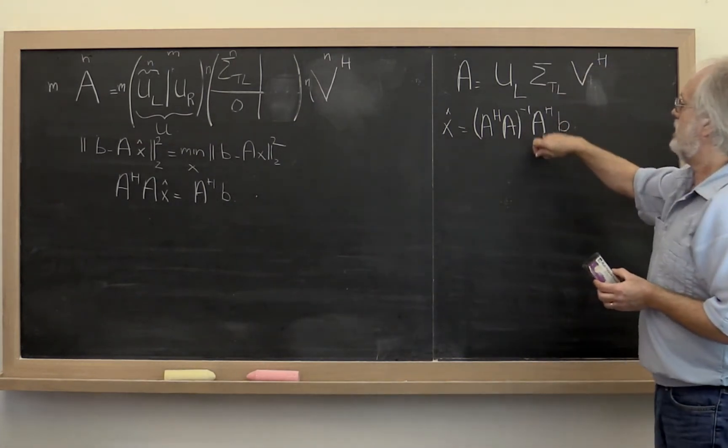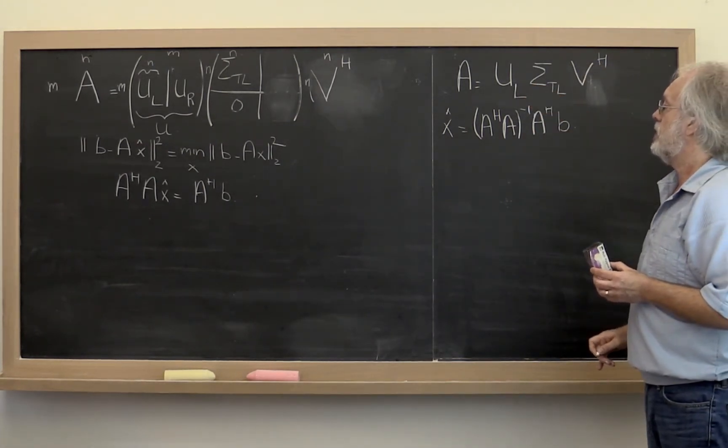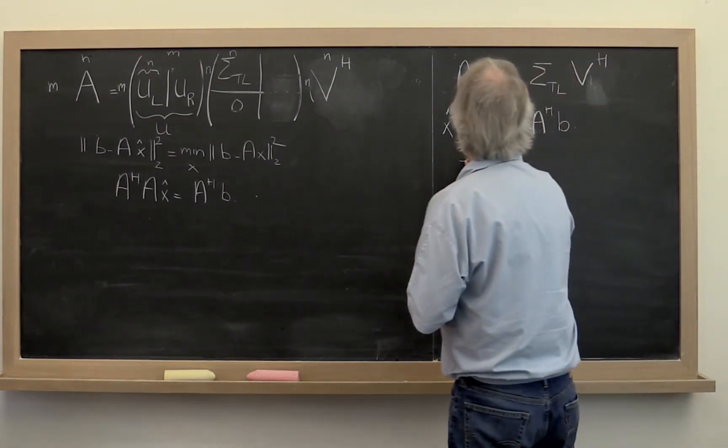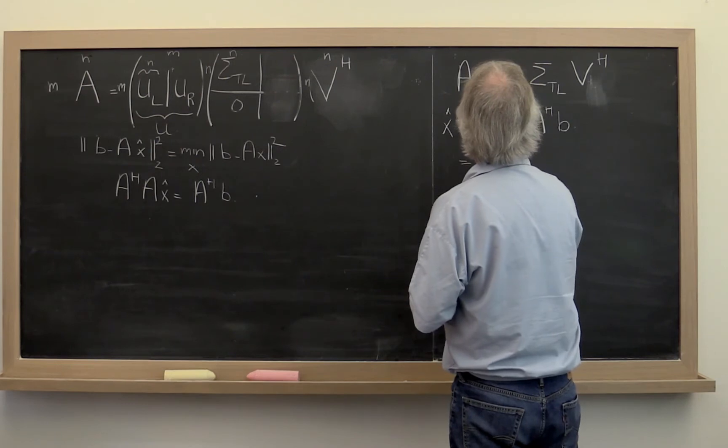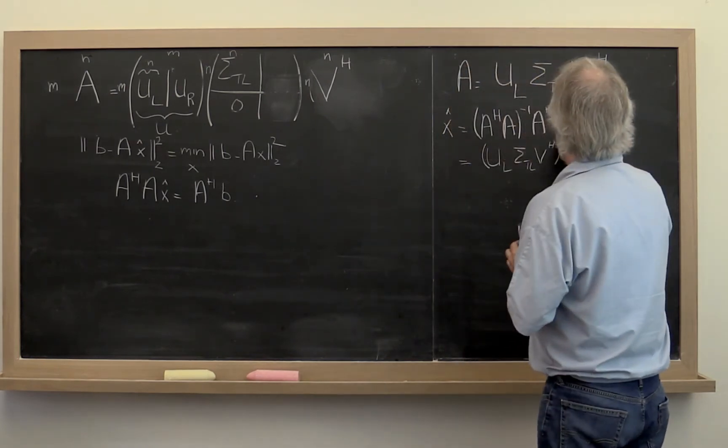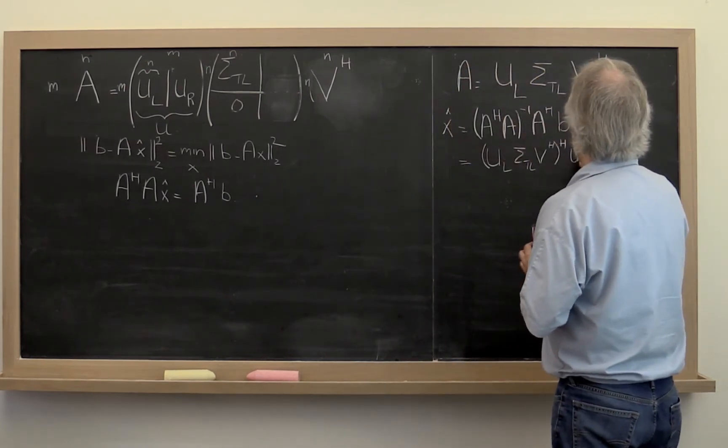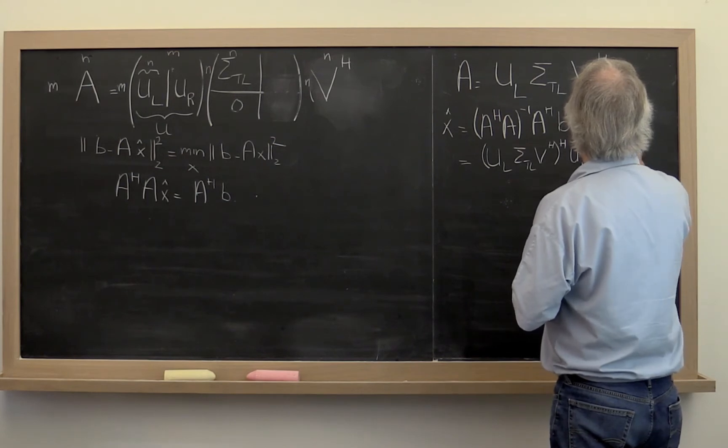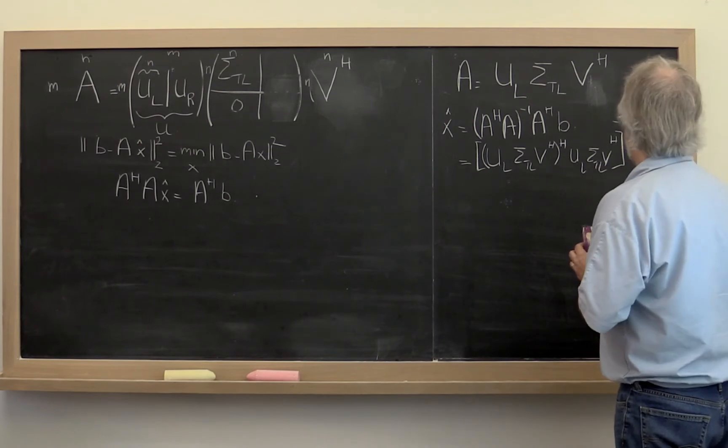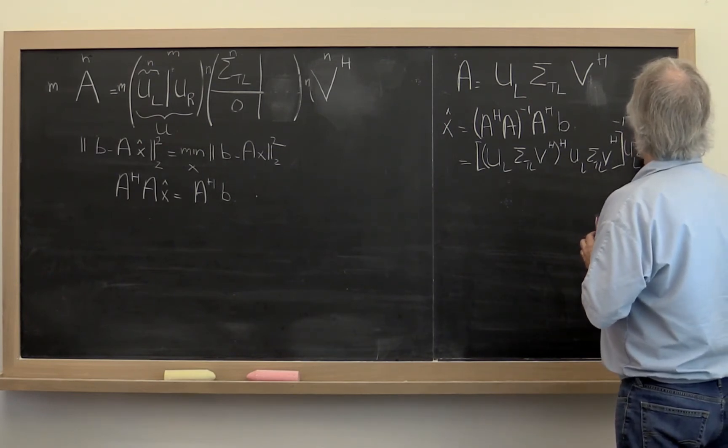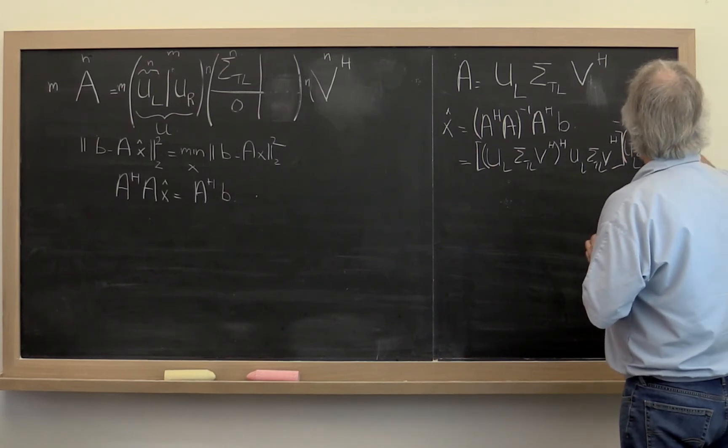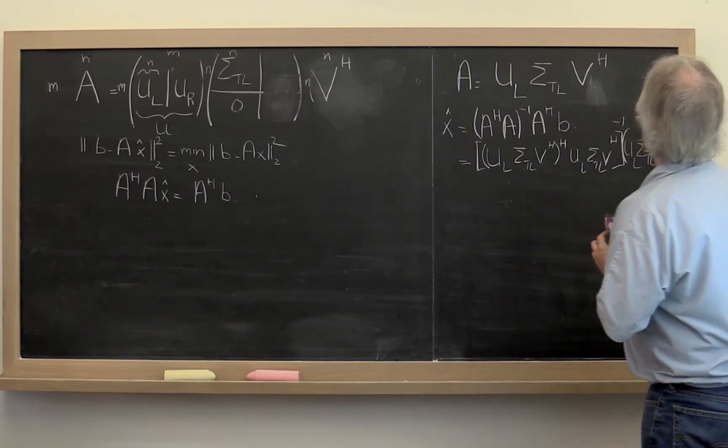Now what if we take the reduced singular value decomposition, and just plug it in everywhere you see A here? What you get is UL sigma top left V Hermitian quantity Hermitian times UL sigma top left V Hermitian quantity inverse times UL sigma top left V Hermitian times vector B.